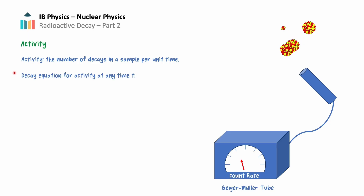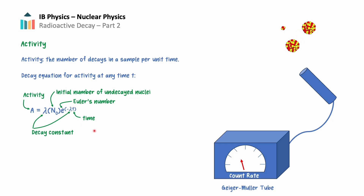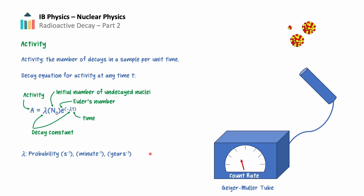Activity can be determined at any time t using the equation provided in your physics data booklet: A equals lambda times n-sub-0 times e to the negative lambda t, where A is the activity or number of nuclei decaying every second, lambda is the decay constant, n-sub-0 is the number of undecayed nuclei, e is Euler's number, and t is time. The units for the decay constant are time to the negative 1 power, such as seconds⁻¹, minutes⁻¹, or years⁻¹.